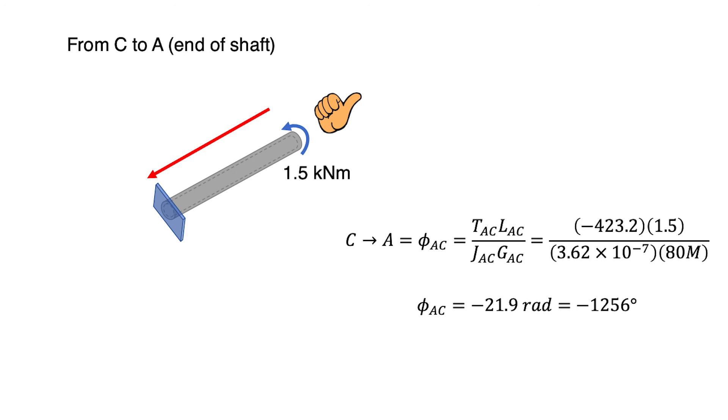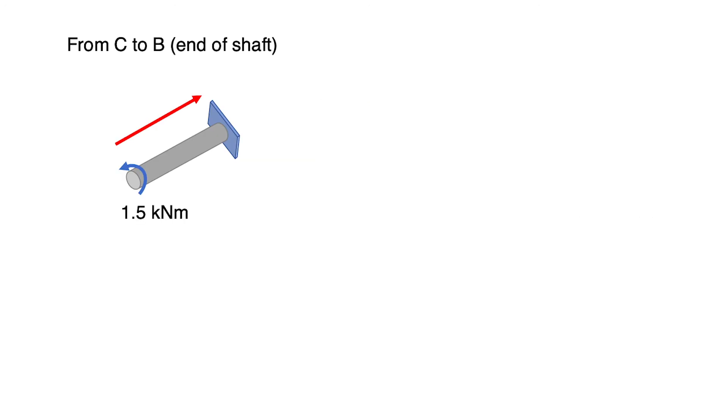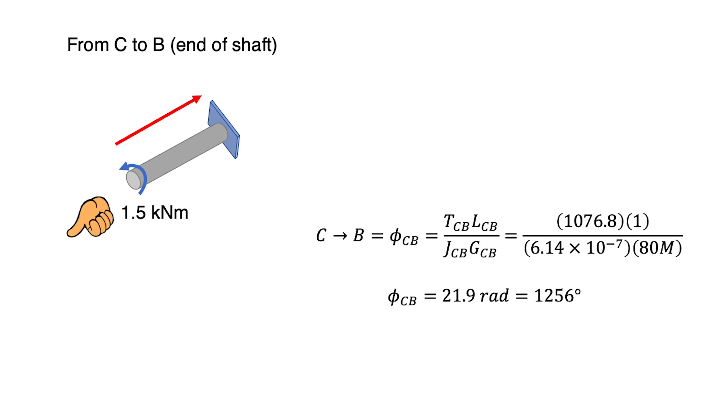Our steps are correct. Or, if we take from the point C to the point B, we calculate the angle of twist. For T, we use the value of internal torque of section CB, which is 1076.8 Nm. And we get φCB = 21.9 radians or 1256 degrees. The positive value means the angle produced from the applied torque is the same direction with the right-hand rule.